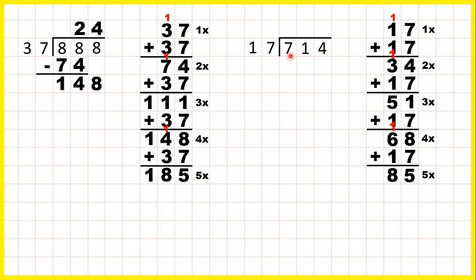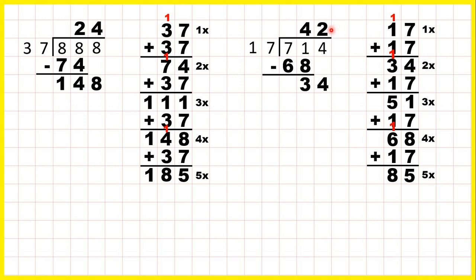We need to find the number that's closest to 71 but still less than 71. We can see that's 68, so we write that underneath. And because 68 is 4 times 17, we write 4 in our answer line. Now we subtract and bring down: 71 minus 68 is 3, and we bring down the 4, so we have 34 divided by 17. We can see that that's exactly 2 times 17, so the last digit of our answer is 2.